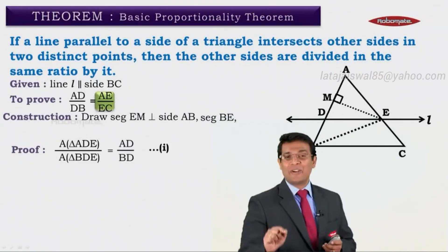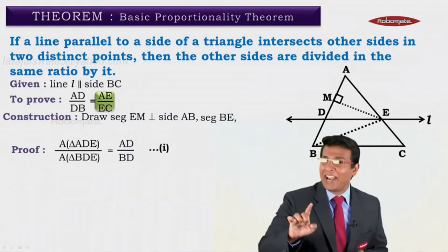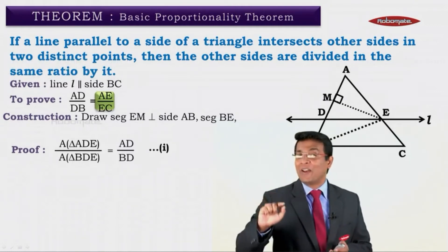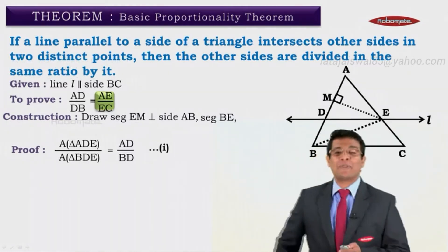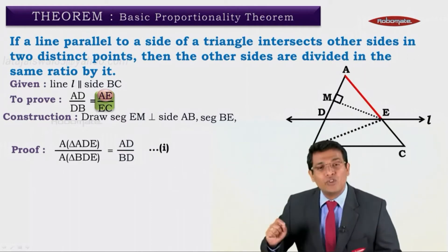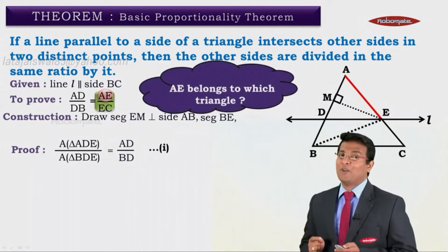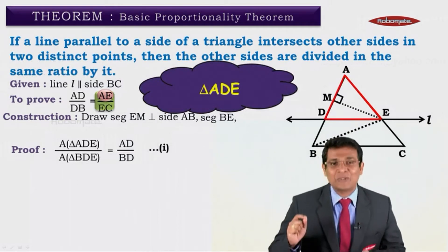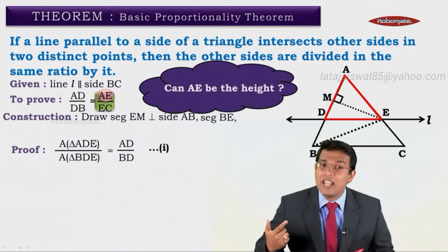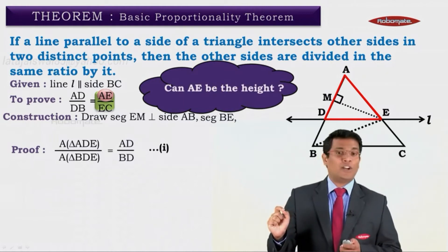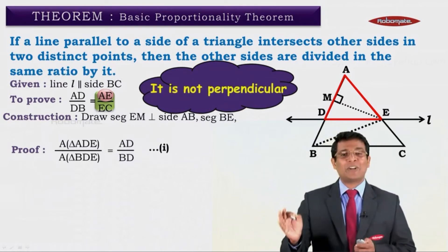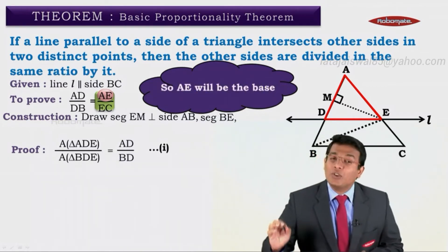We're back, and this is where I had left you after statement number one. I had asked you to think about how to get that right-hand side ratio. When you look at the numerator AE, the first question is: does AE belong to a triangle? Yes, it belongs to triangle ADE. Now for triangle ADE, can AE be the height? No, it cannot be the height, because it is not a perpendicular segment.